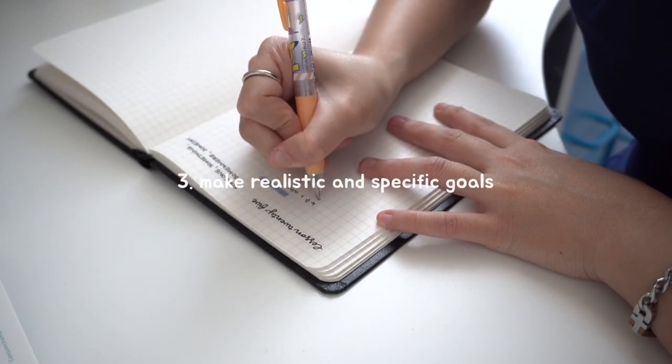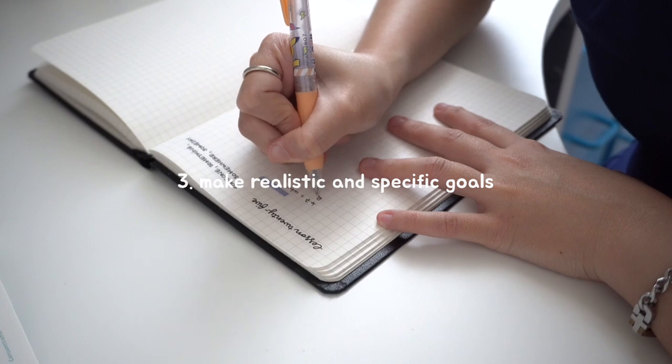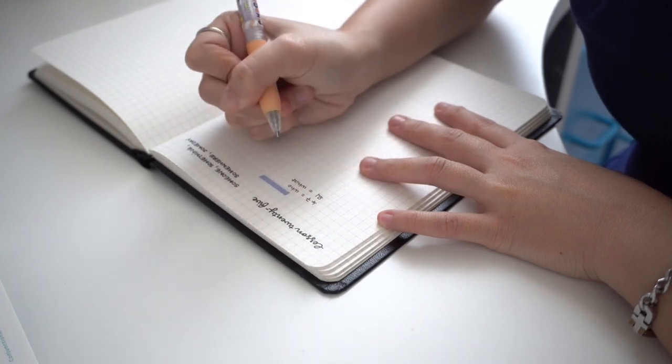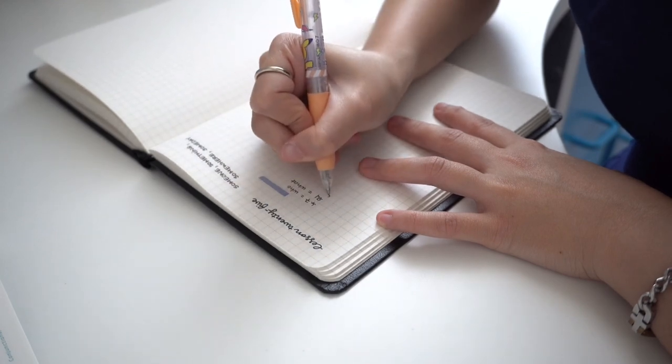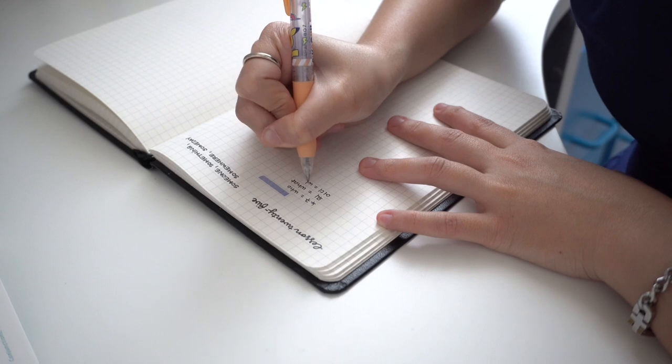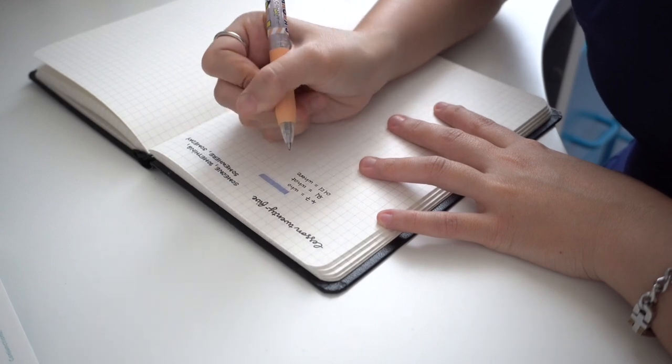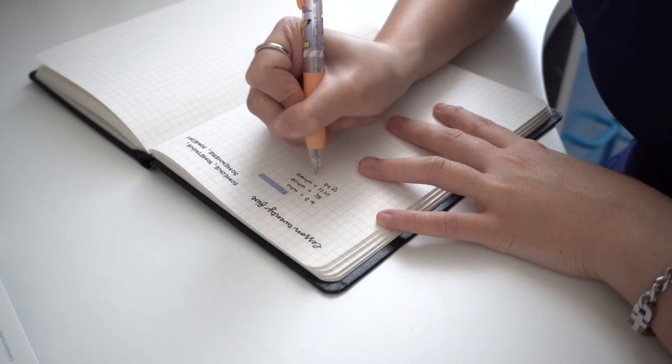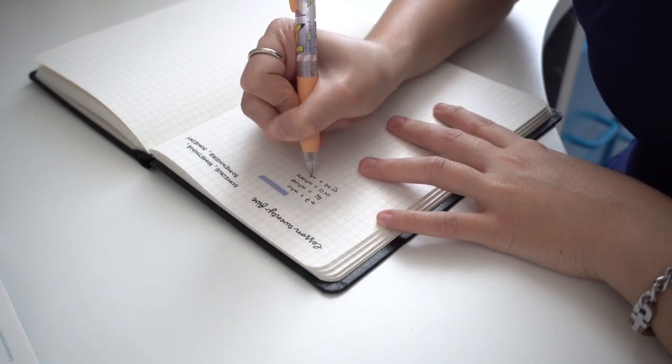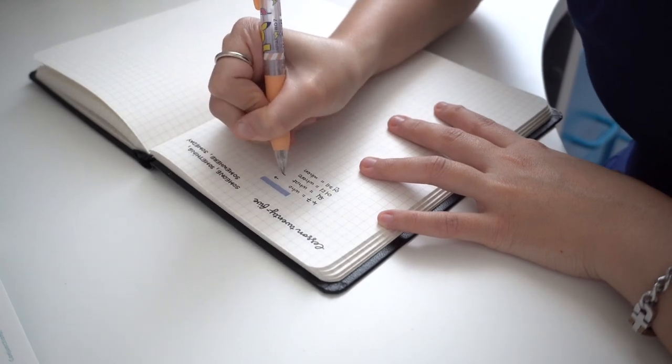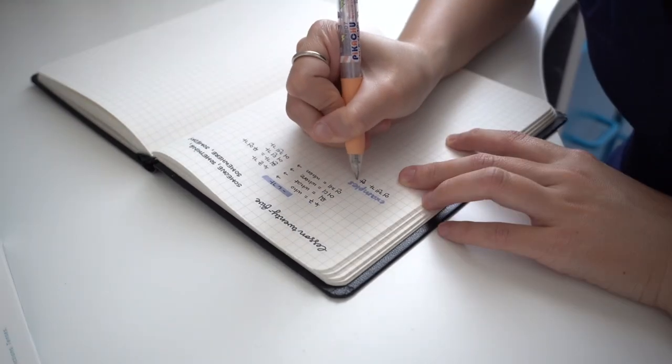The next tip is to make realistic and specific goals. To speak Korean fluently or watch K-dramas without subtitles isn't a bad goal, but you should also set manageable, achievable goals. Something like tackling five grammar points today, or finishing this book by the end of the week. Realistic goals are more motivating and help you reach your end goal easier and faster.